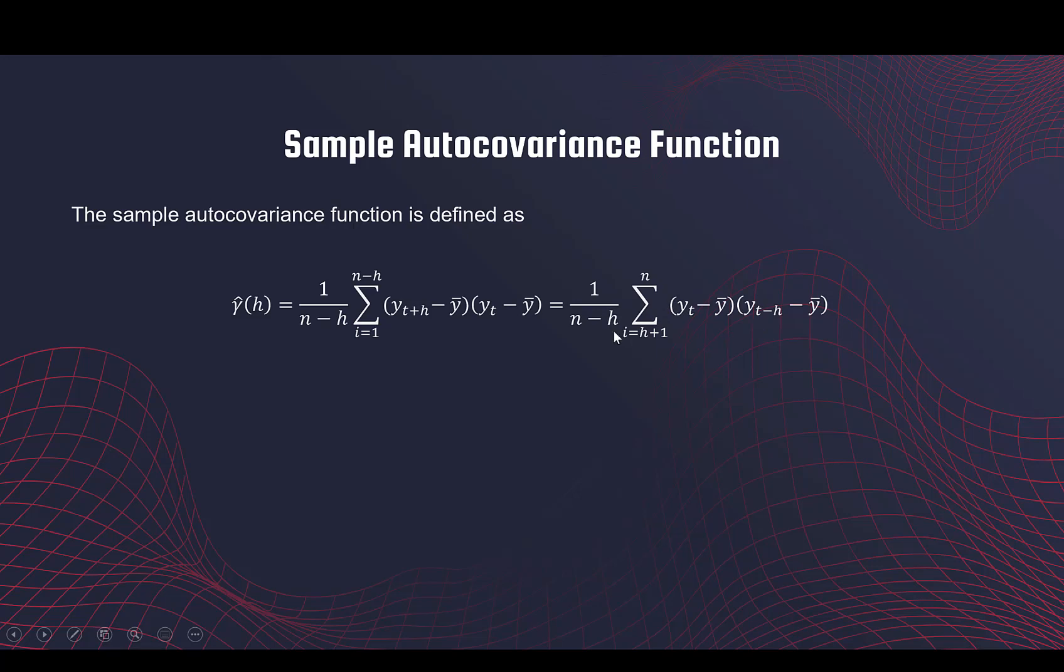What are we doing? We're pulling together all the time points, all the pairs that are h distance away from each other, and we are taking their sample covariance. So this is the estimate for gamma hat h, or the autocovariance function with lag h.